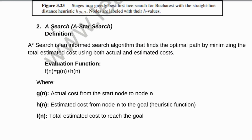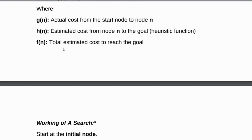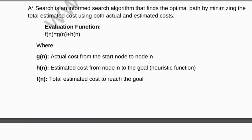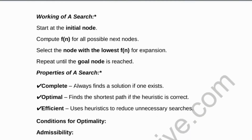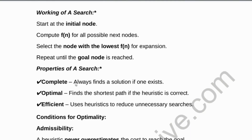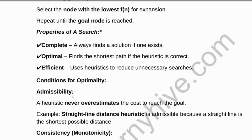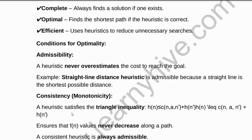Second question: A star search. Start by explaining the definition and evaluation function. Explain each and every factor in the evaluation function, the working of A star search, its properties, and conditions for optimality and admissibility.